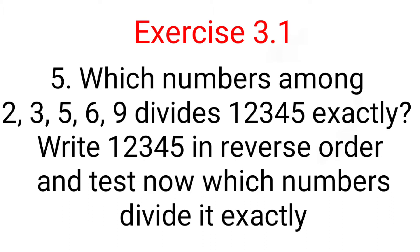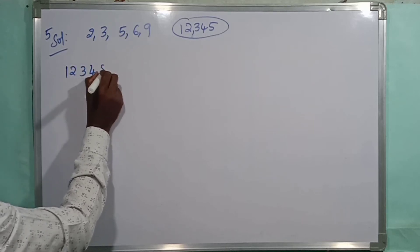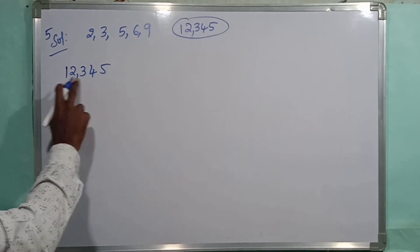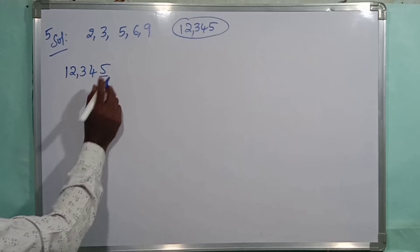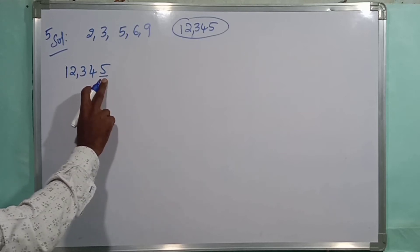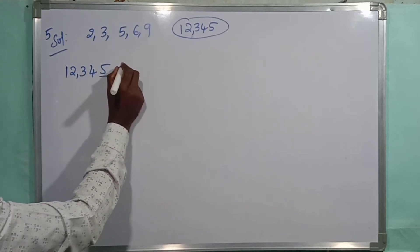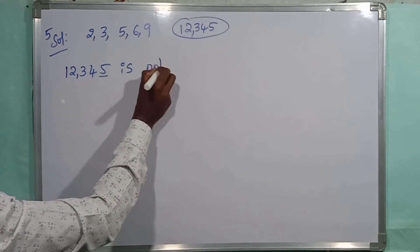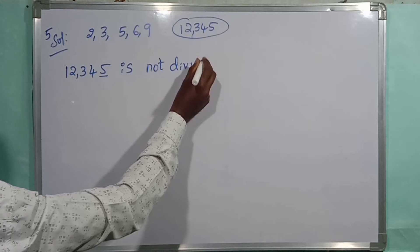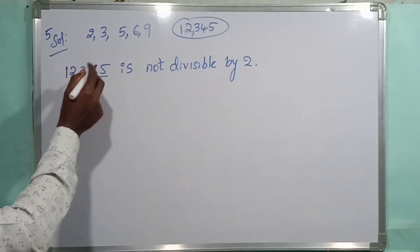Now we know the divisibility rule of 2, so we are checking 12345 with 2. The divisibility rule for 2 is that the units place should be an even number. Here the units digit is 5. Is 5 an even number or odd number? 5 is an odd number, so 12345 is not divisible by 2.